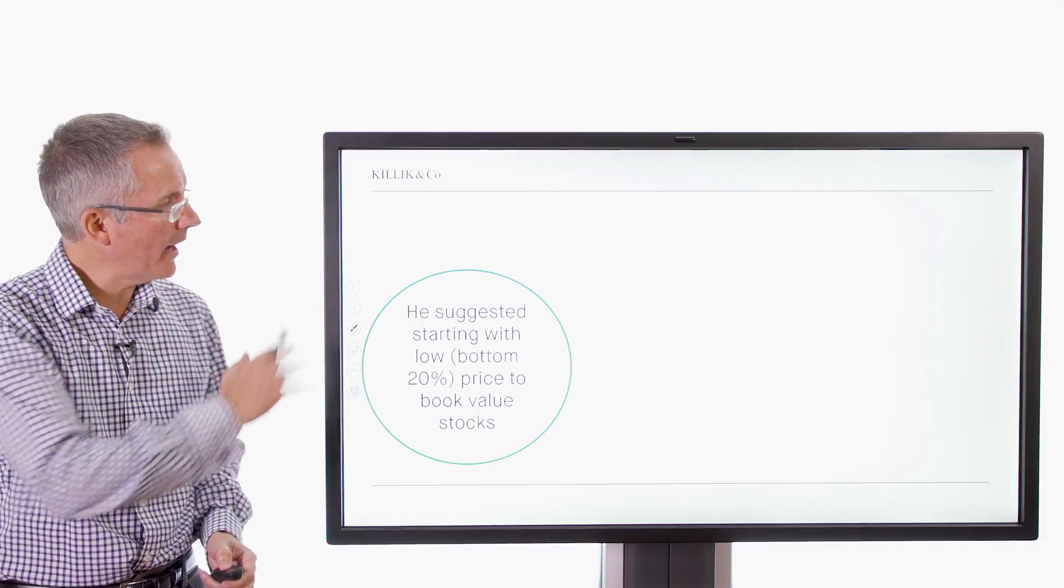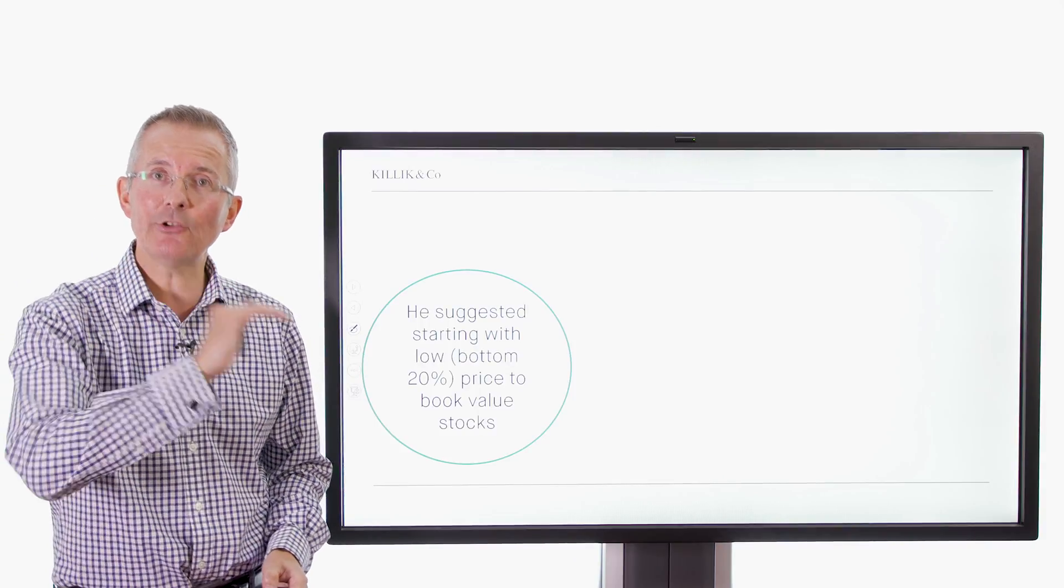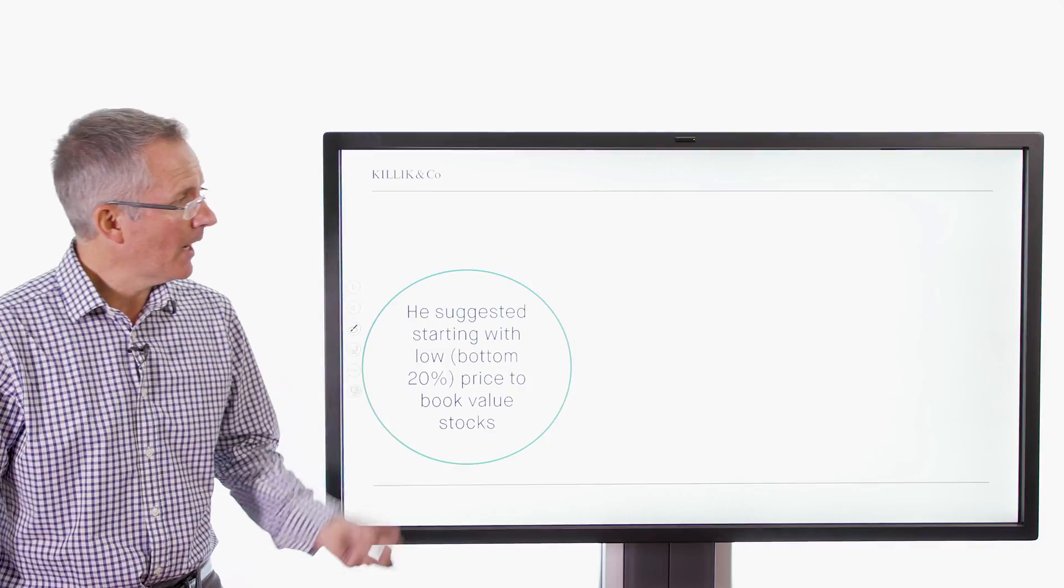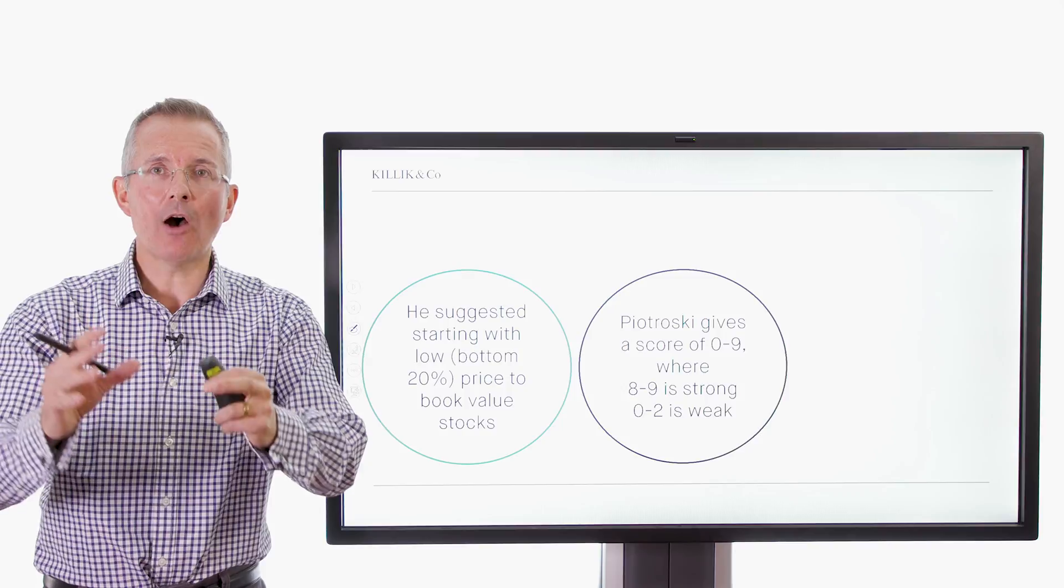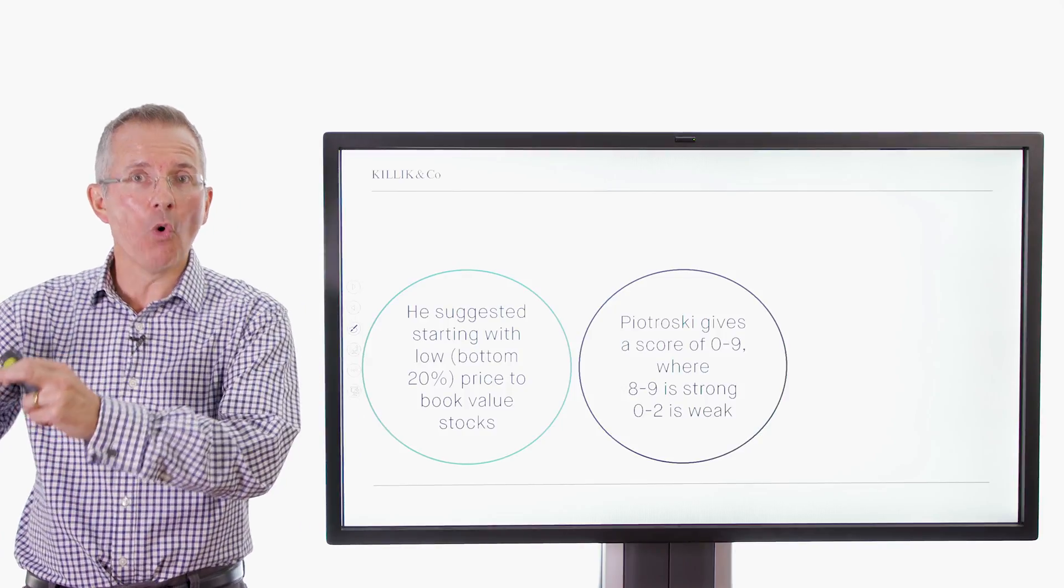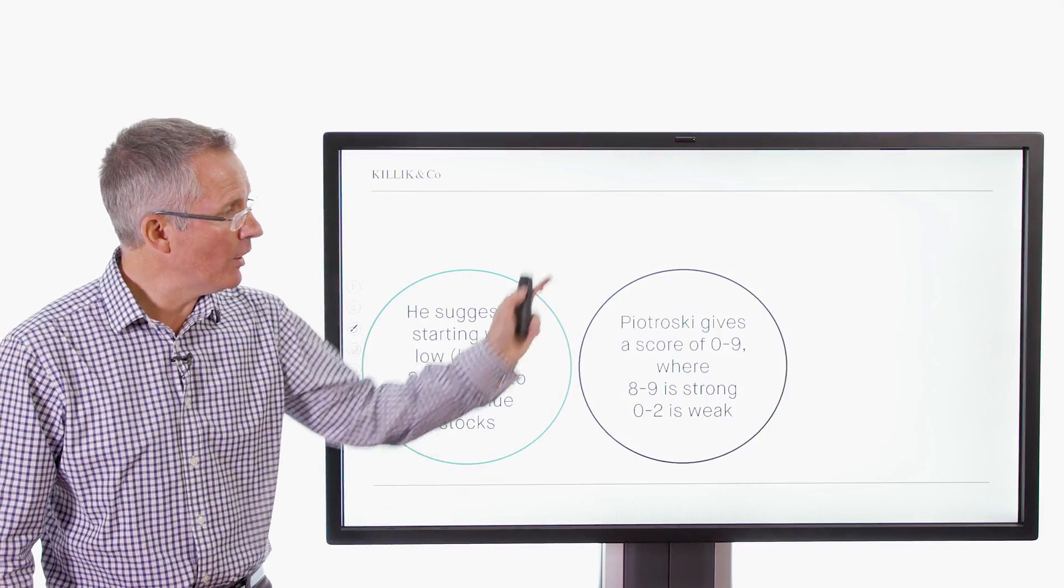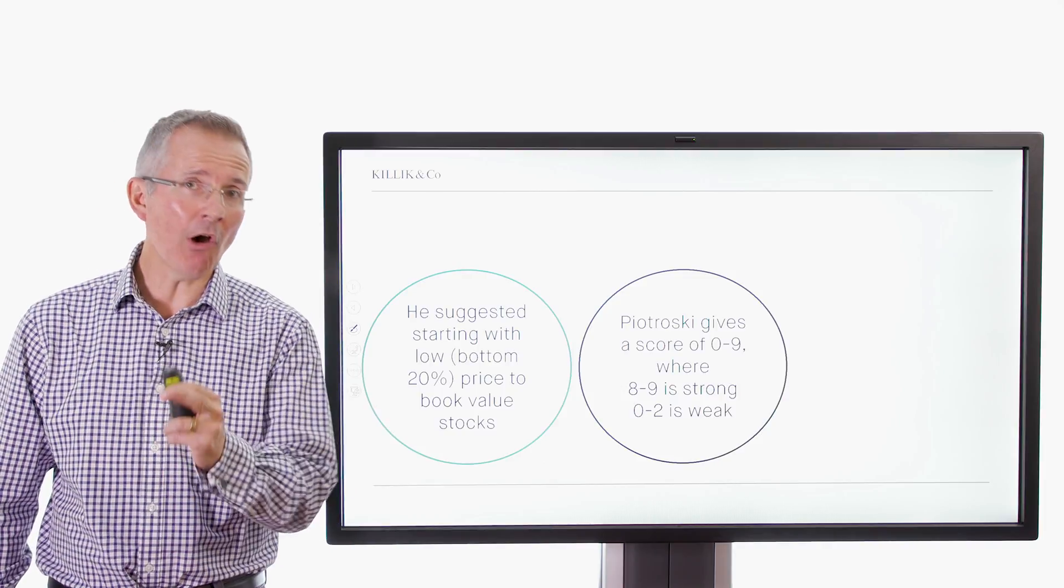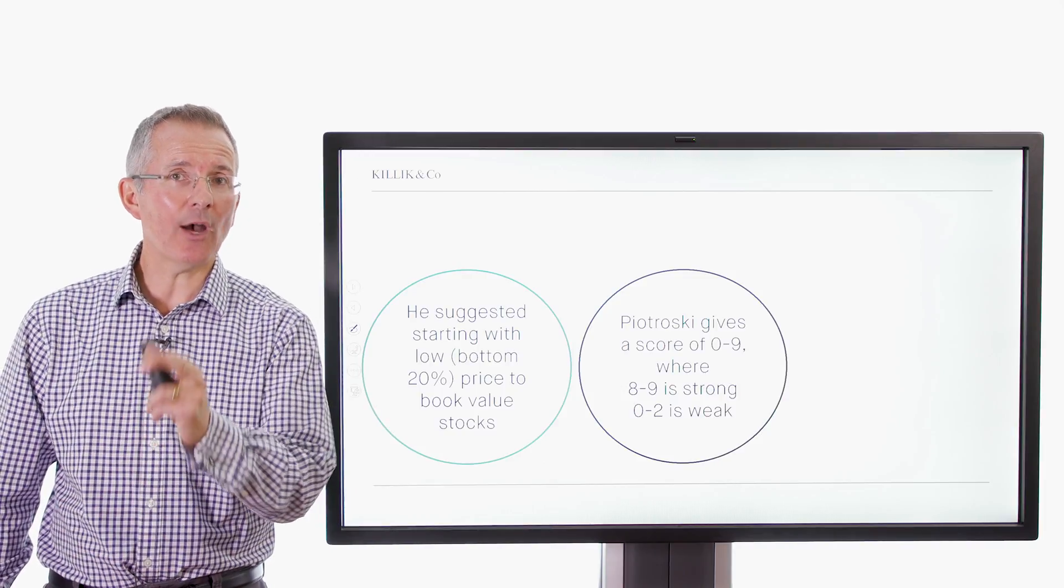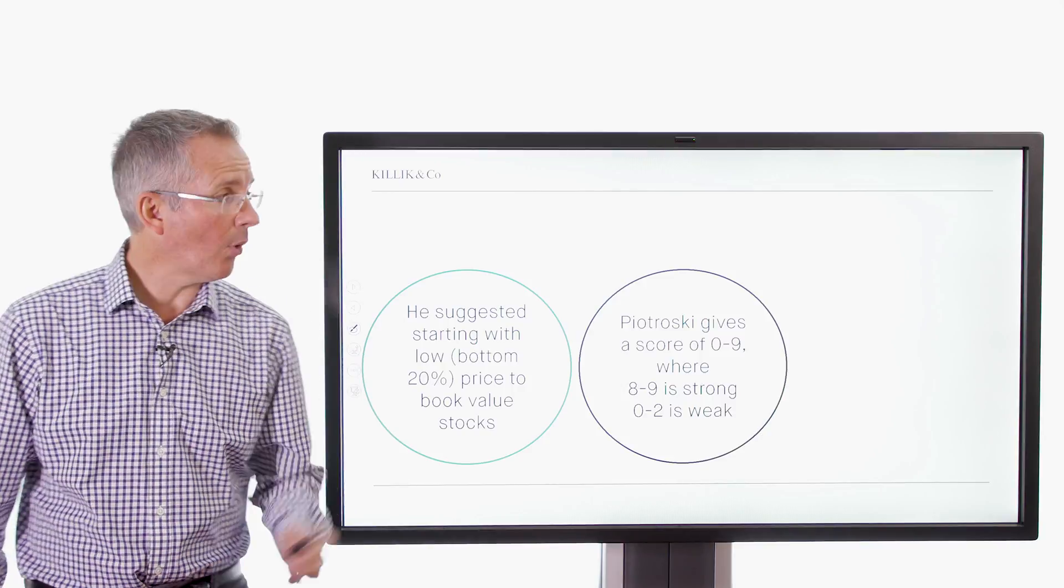Now, you can apply F-scores to a wider population of stocks, but that's where he suggested you want to start. And Piotroski basically allocates using F-scores 0 to 9, 9 being good, 0 being low. So we're looking for stocks that score well on the F-score basis. There are 9 ways to score a point. And if you get all 9, there's your 9-point stock, your maximum score.